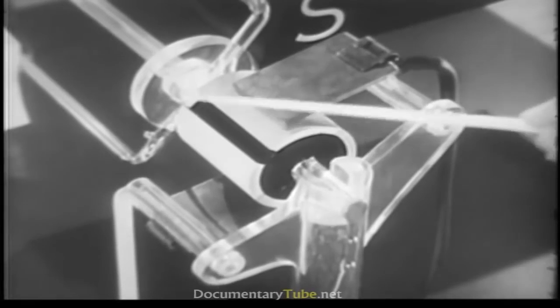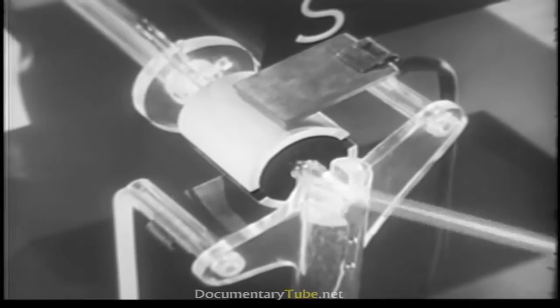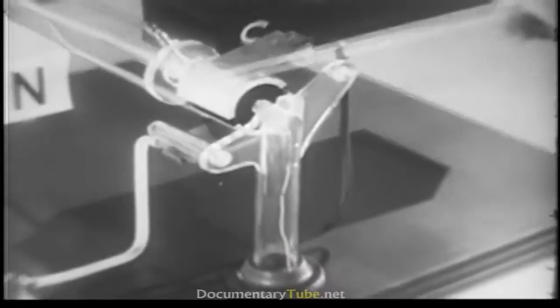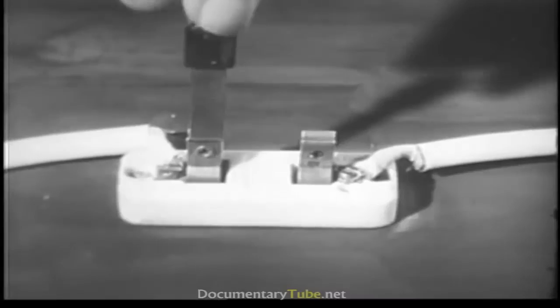This is the job that is done by the segments and brushes. The segments are made of copper, which is an excellent conductor of electricity. Each segment forms a half circle and is connected to one side of the loop. The segments rotate with the wire loop.